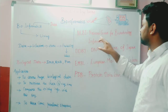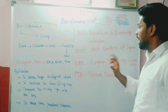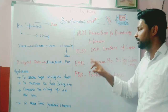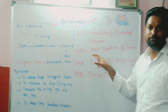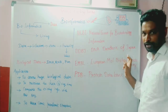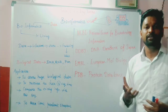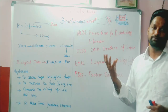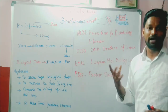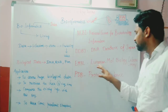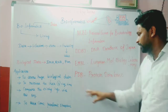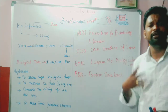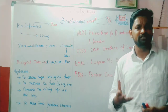NCBI stands for National Center for Biotechnology Information. Another repository is DDBJ — DNA Data Bank of Japan. Each and every country has its own genetic repositories for storing sequencing biological information. There is also EMBL — European Molecular Biology Laboratory — and PDB, which means Protein Data Bank. There are many biological data repositories available for storing biological information.